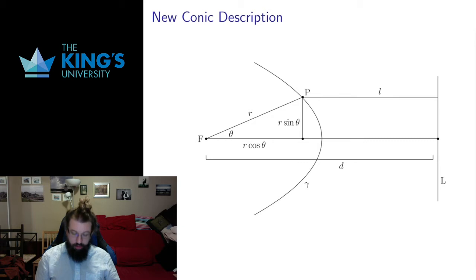So R and L have to be the same. So for the parabola, R over L is equal to one. But I'm going to allow for R over L to be some other positive number E. And that's going to give me different shapes.